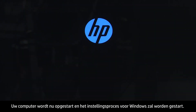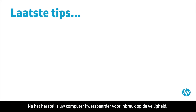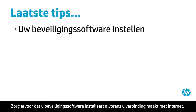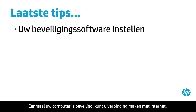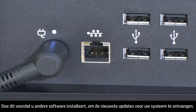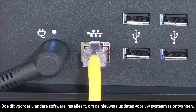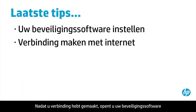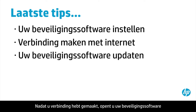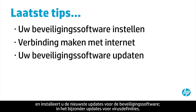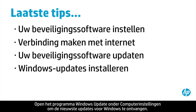Now your computer will restart and begin the Windows setup process. After recovery, your computer is more vulnerable to security threats. Make sure you have security software installed before connecting to the Internet. Once your computer is secure, connect to the Internet. Do this before installing other software in order to get the latest updates to your system. After connecting, open your security software and get the latest updates, especially updates to virus definitions. Open the Windows Update tool in PC settings to get the latest updates for Windows.